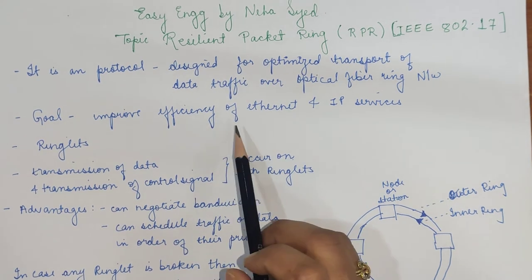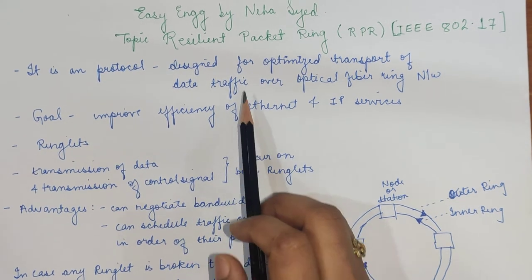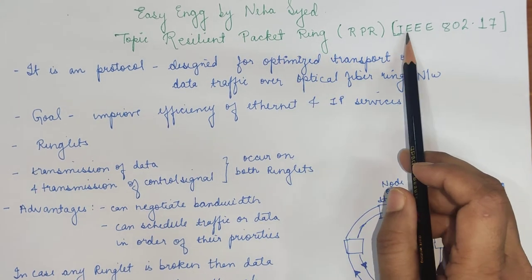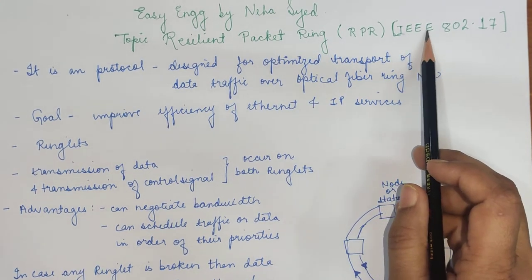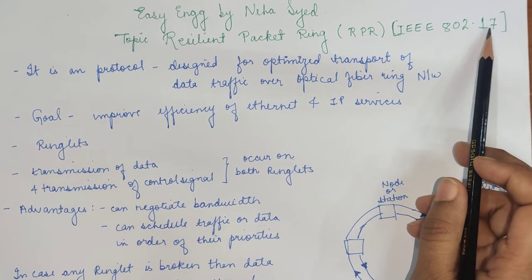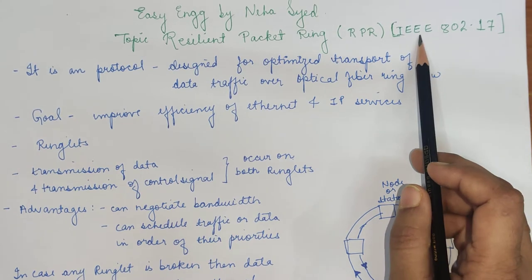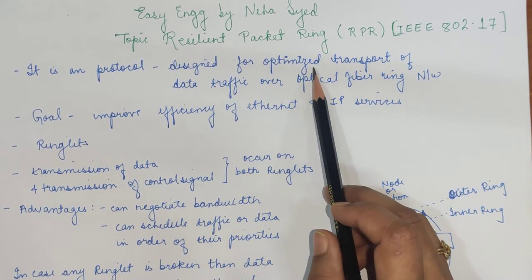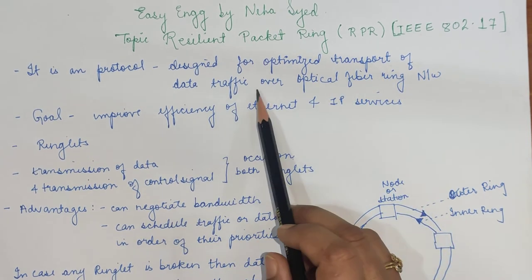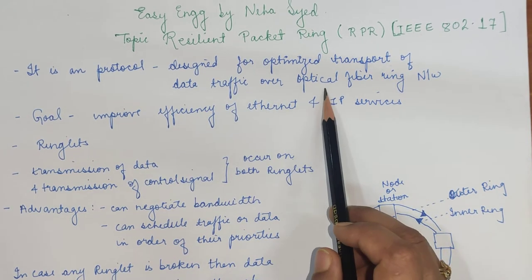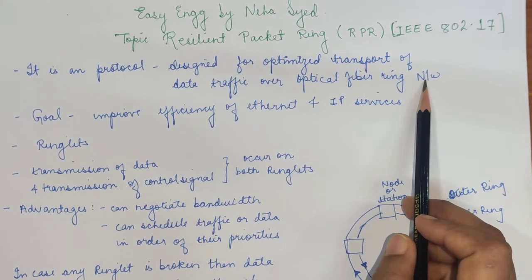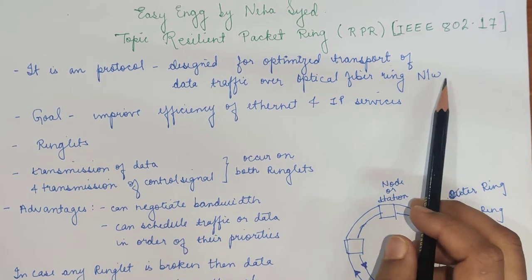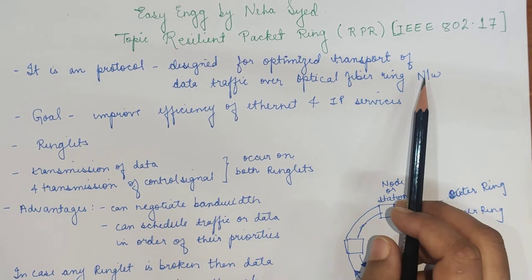Today's topic is Resilient Packet Ring, also known as IEEE 802.17. It was defined by the IEEE and is a protocol designed for optimized transport of data traffic over an optical fiber ring network, meaning it optimizes the transport of data to avoid congestion.